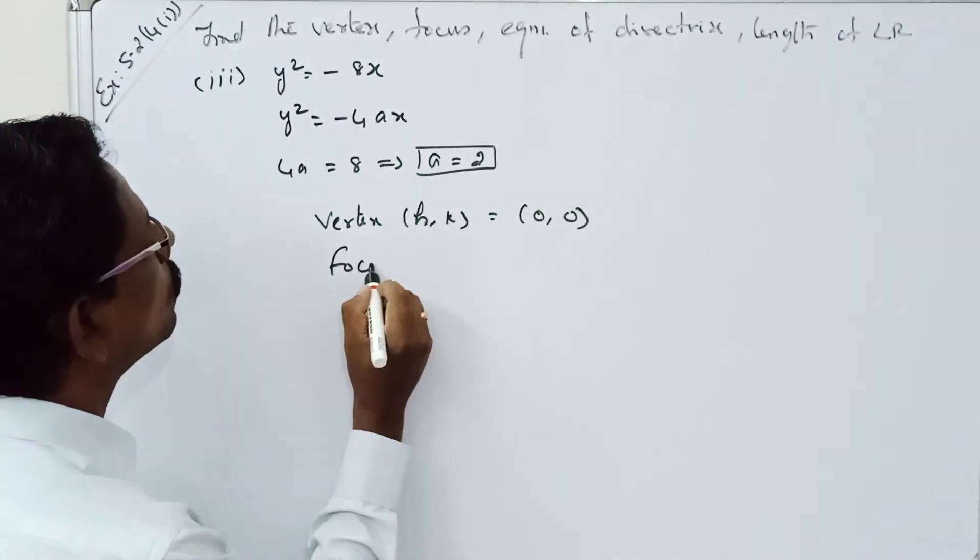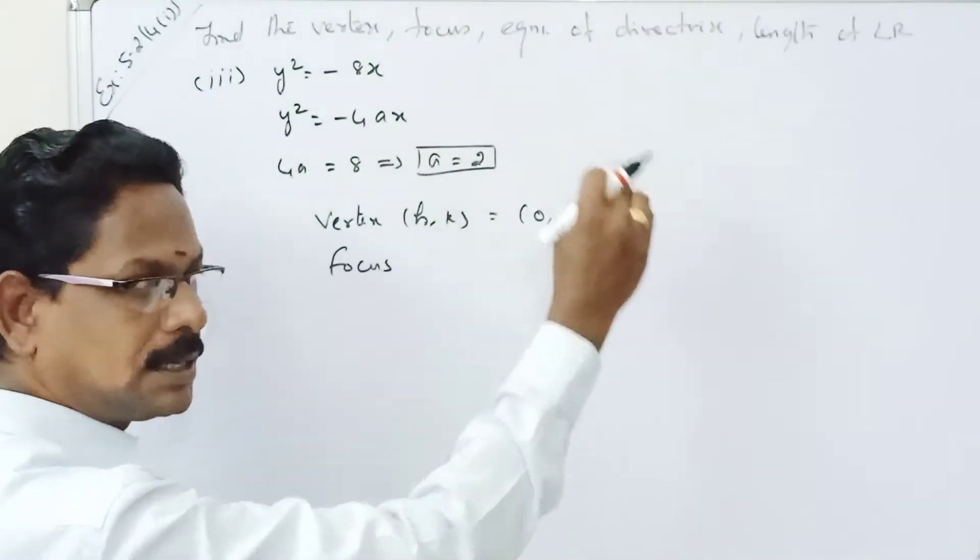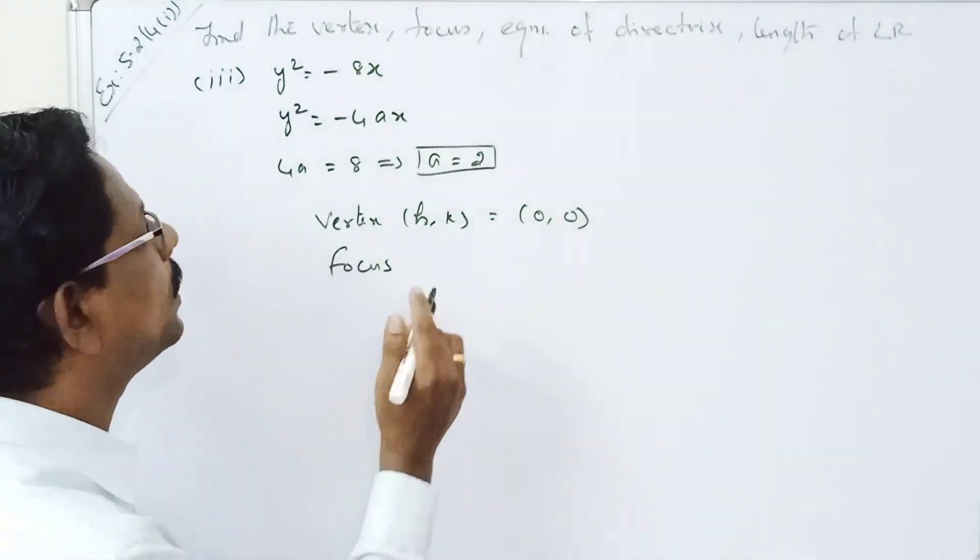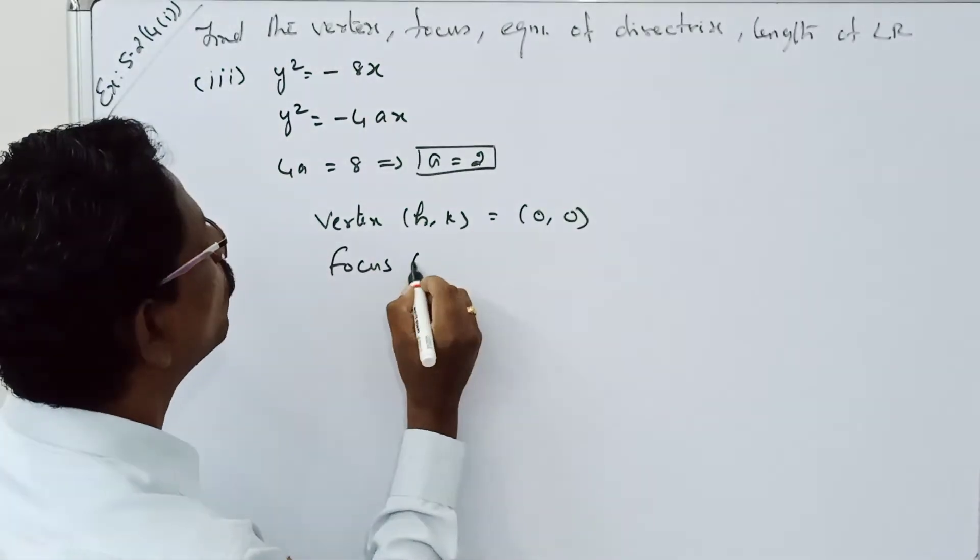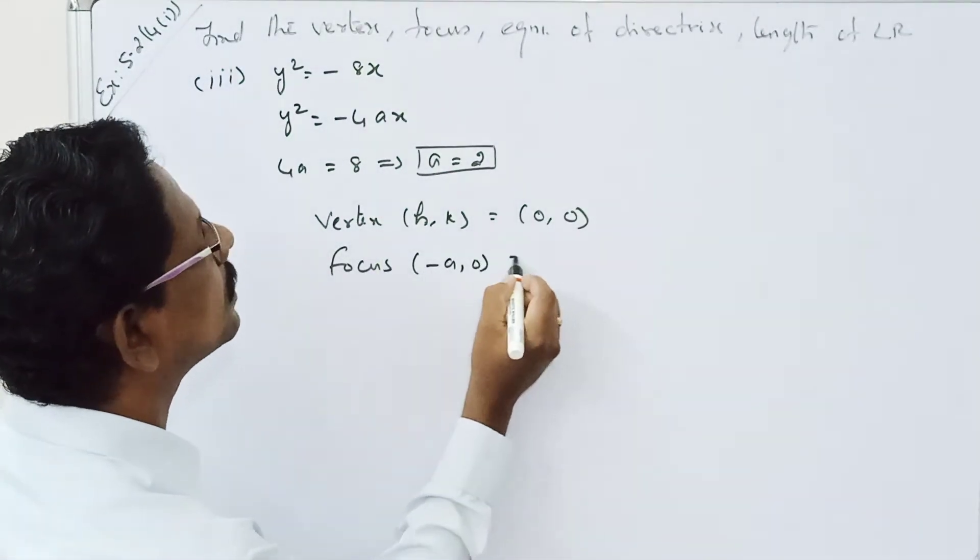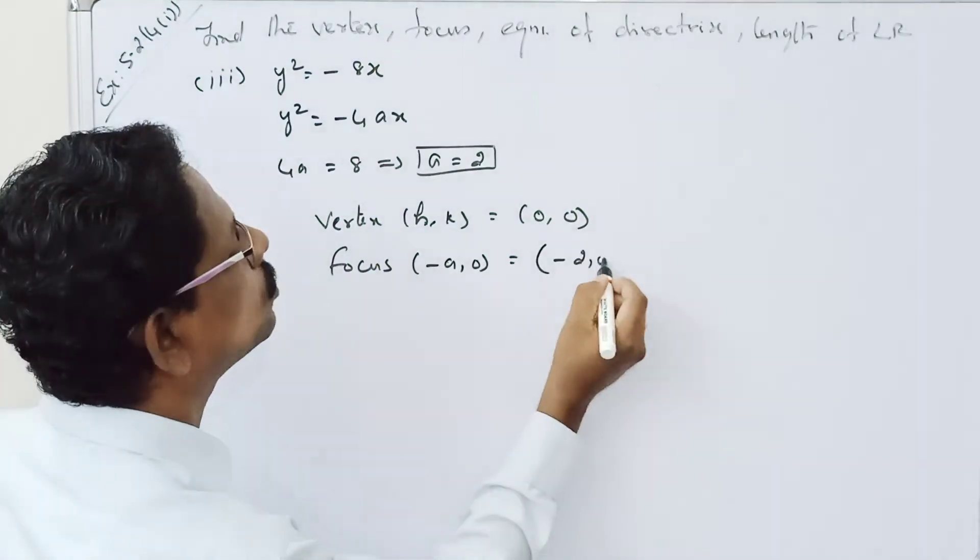Now the focus. It opens leftwards. Therefore, the focus is at minus a comma 0, so minus 2 comma 0. The parabola opens leftwards.